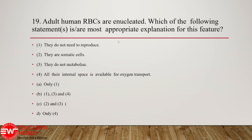Question number 19: adult RBCs are enucleated. Which of the following is the most appropriate explanation? Options: they do not need to reproduce; they are somatic cells; they do not metabolize; all the internal space is available for oxygen transportation. The correct option is D — all the internal space is available for oxygen transportation — because mature RBCs lose their organelles in order to accommodate the maximum amount of hemoglobin, which is functionally correlated with oxygen transportation.